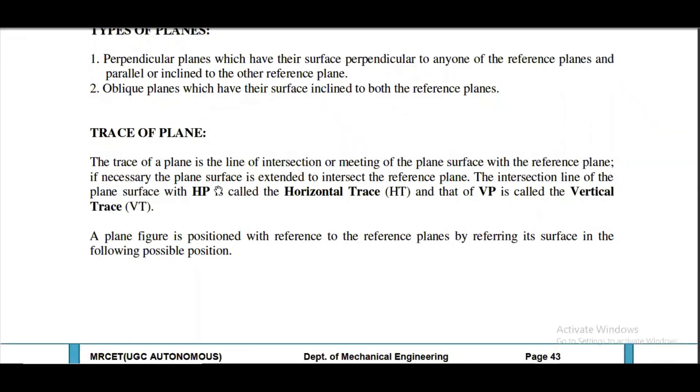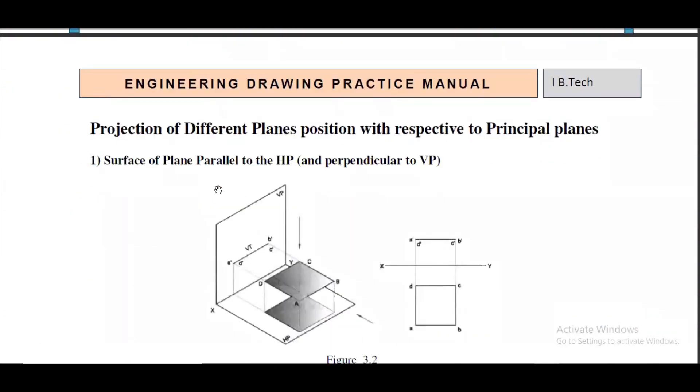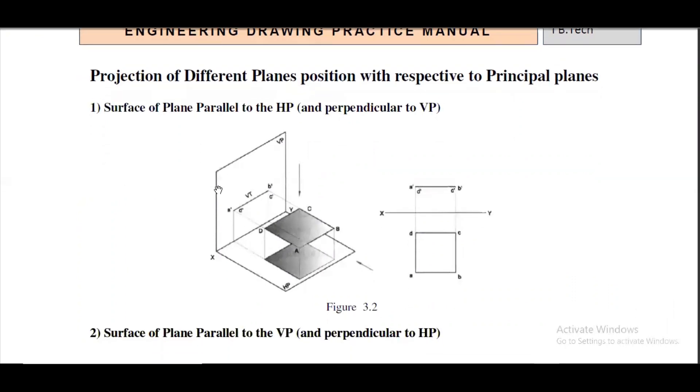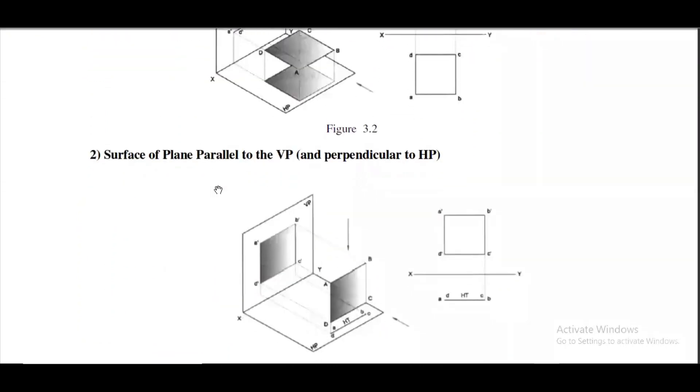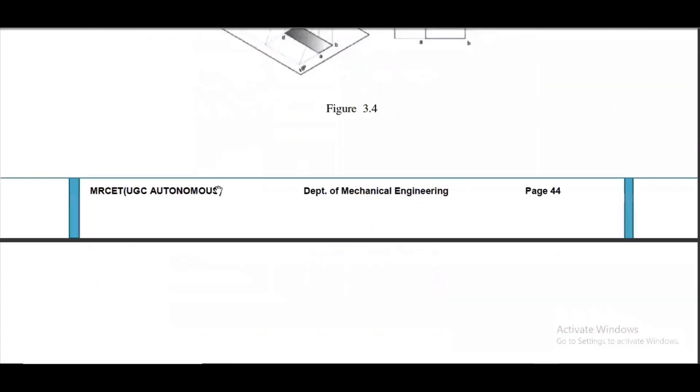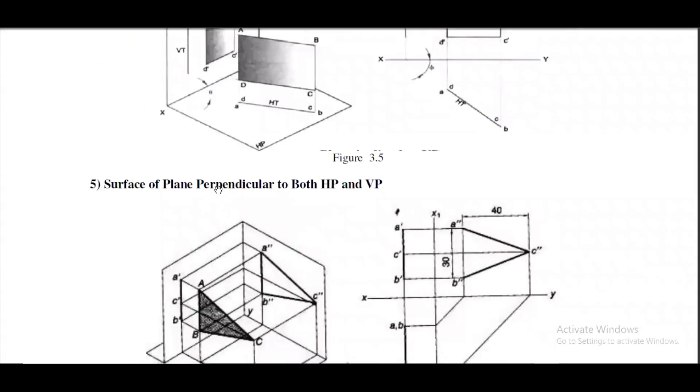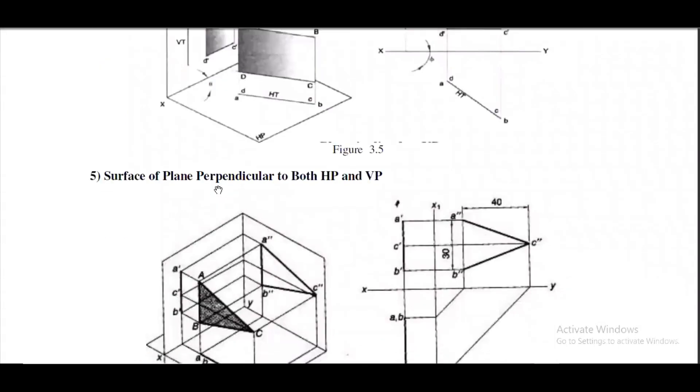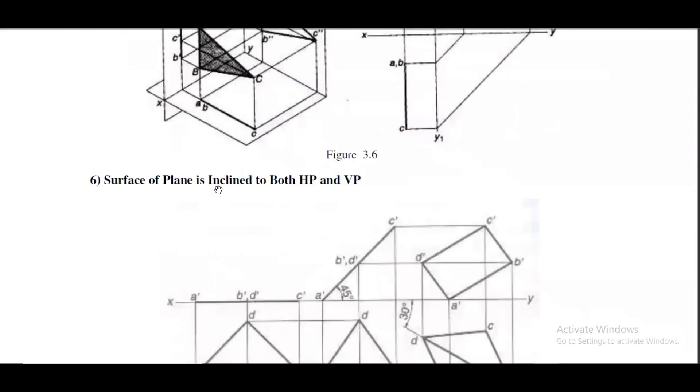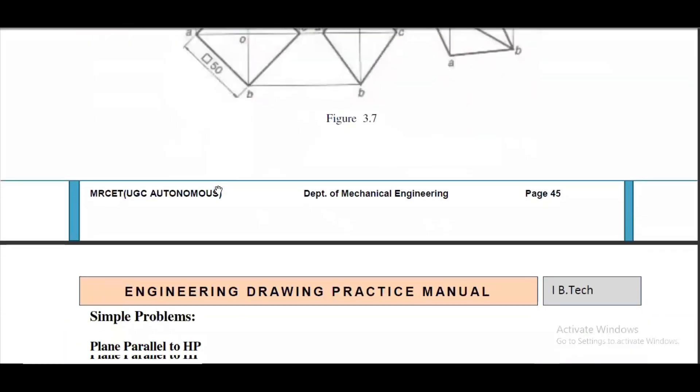We will now discuss how many types of possible positions the surfaces can be seen. The plane surface positions we mainly deal with six types: first is surface of the plane parallel to HP, second is surface of the plane parallel to VP, third is surface of the plane inclined to HP and perpendicular to VP, fourth is surface of the plane inclined to VP and perpendicular to HP, fifth is surface of the plane perpendicular to both HP and VP, and sixth is surface of the plane inclined to both HP and VP. These are the six conditions which we will be discussing.